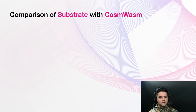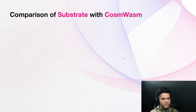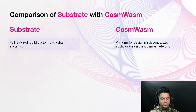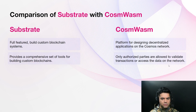Now let's compare Substrate with CosmWasm. A lot of new developers confuse Substrate and CosmWasm, so let's try to understand the differences between them. Substrate and CosmWasm are both blockchain development platforms, but they have some key differences. Substrate is a fully featured framework for building custom blockchain systems, while CosmWasm is a platform specifically designed for developing decentralized applications on the Cosmos network. Substrate provides a comprehensive set of tools including consensus algorithms, storage, networking, and smart contract support, while CosmWasm focuses solely on dapp development, providing a way for developers to build and deploy smart contracts on the Cosmos network.